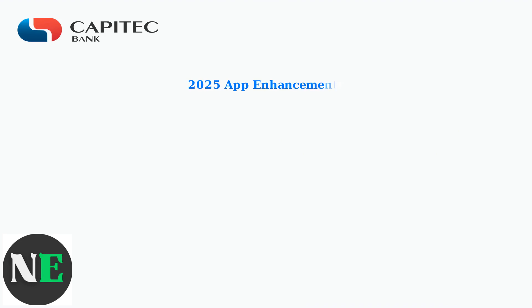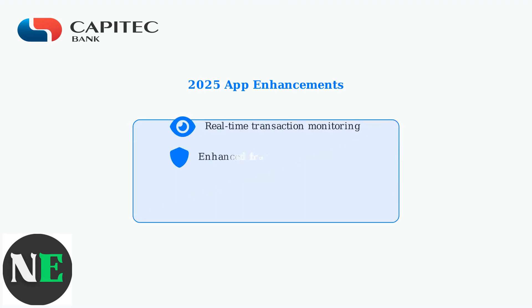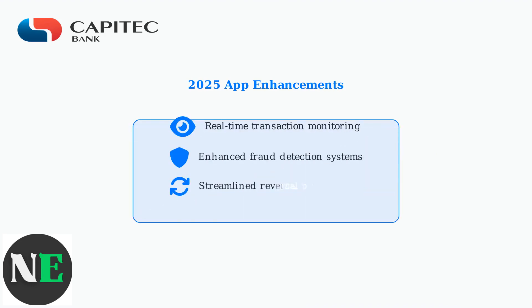As of 2025, Capitec has enhanced its app with several key improvements including real-time transaction monitoring, enhanced fraud detection systems, streamlined reversal request procedures, and improved dispute resolution processes. Understanding these distinctions and capabilities helps you effectively manage your payments and know when to use cancellation versus reversal options in the Capitec app.